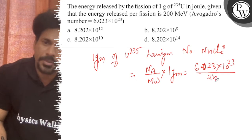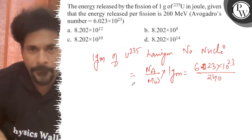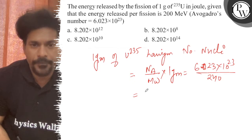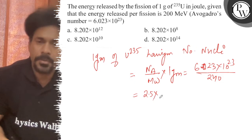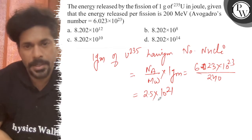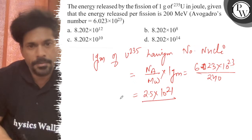Mw is approximately 240, so this equals 1 by 40, which we can write as 2.5 × 10^21. So we have the number of fissions.